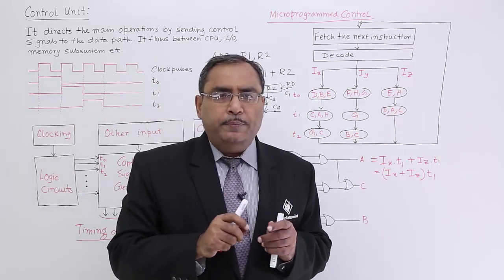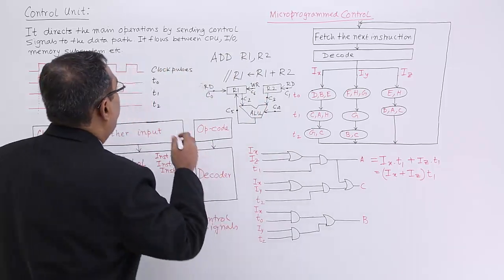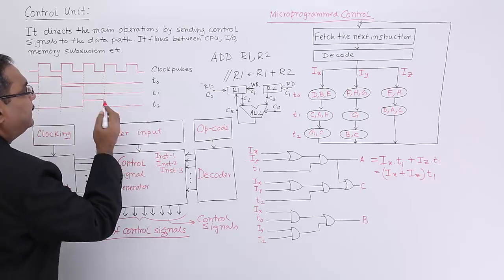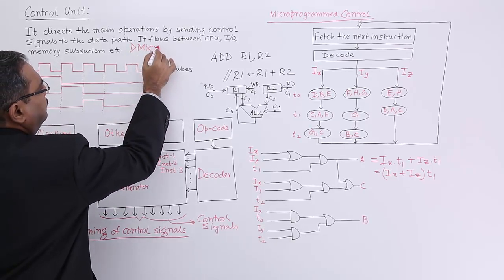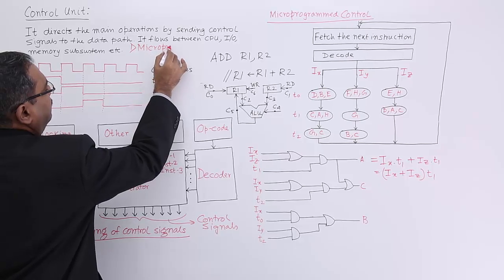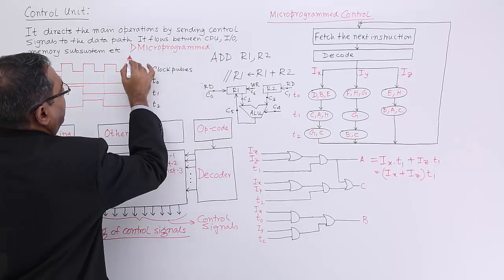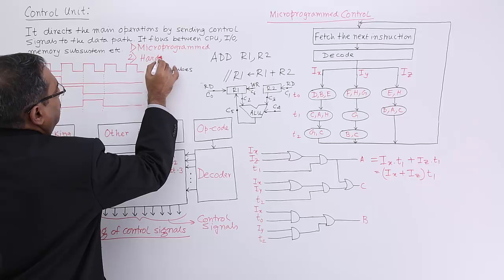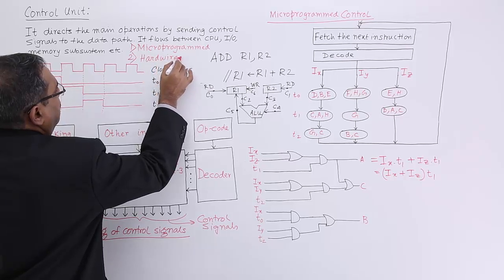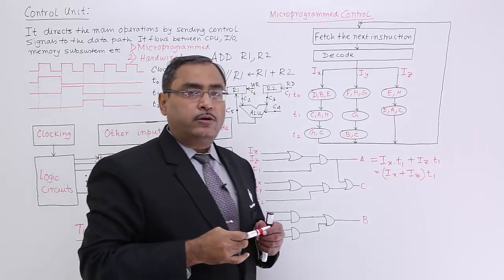Control circuits can be fabricated in 2 different ways. One is a micro program control, I am writing this one here, and another one is a hardware control. Look at the spelling of hardware please.